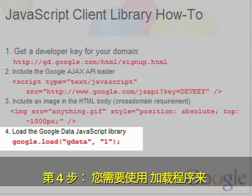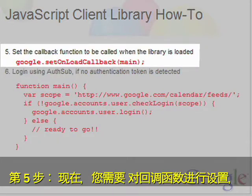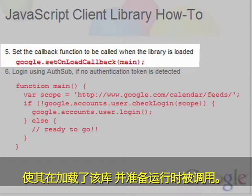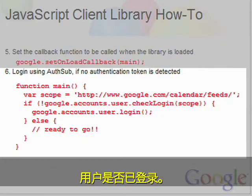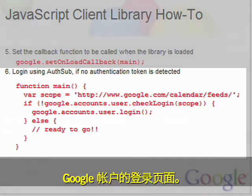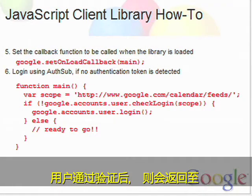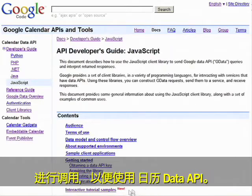Step four, you need to use the loader to load in the JavaScript client library. Step five, you need to set the callback function to be called when the library is loaded and ready to go. Step six, inside the callback function, you first need to check if the user has logged in. If not, you need to redirect that user to the Google account page to log in. The user will then be returned back to your page when they are authenticated. Now you're ready to use the JavaScript client library to make calls to the Calendar Data API.